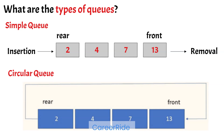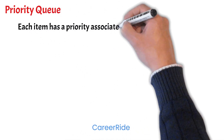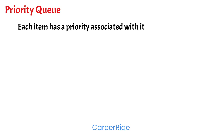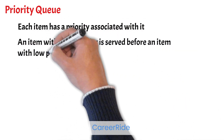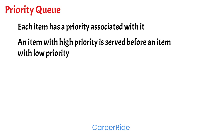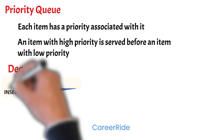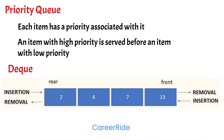The main advantage of a circular queue over a simple queue is efficient memory utilization. The third type is a priority queue, which is a special type of queue where each item has a priority associated with it. An item with higher priority is served before an item with lower priority; if items have the same priority, they are served according to their order in the queue. The fourth type is a Deque, that is a double-ended queue, where insertion and removal of elements can be done from both ends, so it does not strictly follow FIFO order.